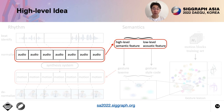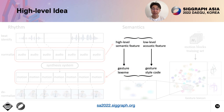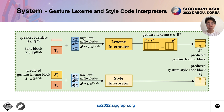To disentangle the multi-level audio features, we apply contrastive learning to decouple high and low-level audio features from different layers of the pre-trained audio encoder. We use text features as the anchor. The highest layer audio feature is considered as the positive sample, while the features of the lower layers are all treated as negative samples. We fine-tune the encoder in a separate pre-training stage using only the speech data. We design two interpreters to predict gesture lexeme and style code, conditioned on high and low-level audio features respectively.